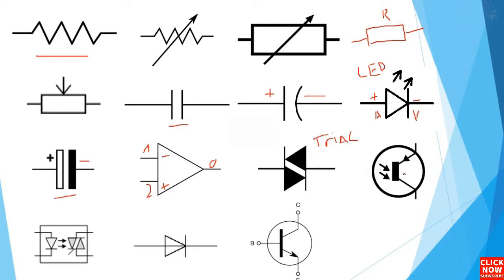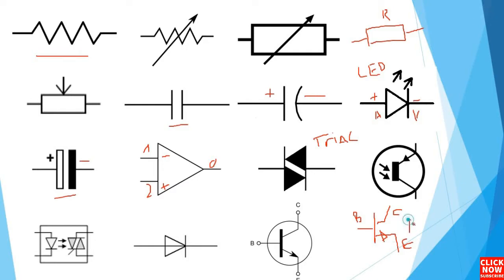Basically this is a photo transistor. This symbol is for a photo transistor. A normal transistor receives a voltage or a current at its base, but for the photo transistor it receives light. This is the symbol for a normal transistor with base, collector, and emitter. The arrow here is towards the emitter — towards the emitter means this is an NPN transistor.